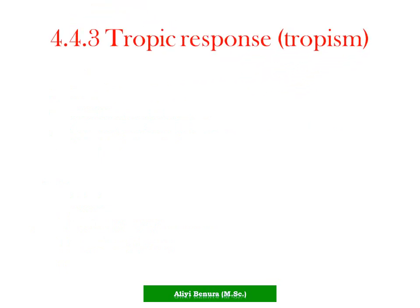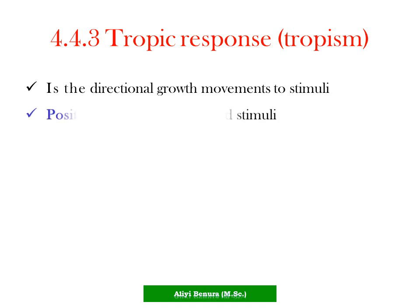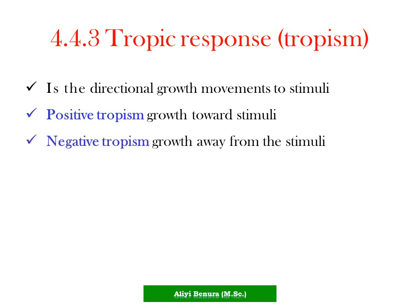4.4.3 Tropic response, or tropism, is the directional growth movement in response to a stimulus. Positive tropism means the plant grows toward the stimulus, whereas negative tropism means the plant grows away from the stimulus.